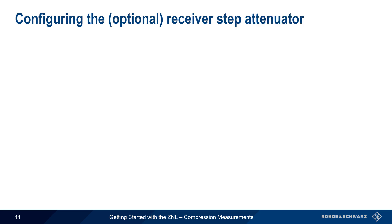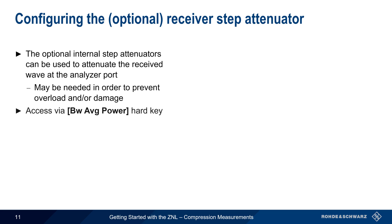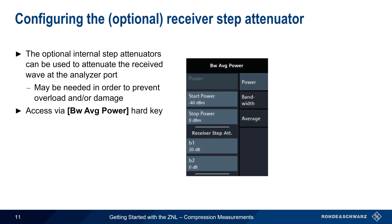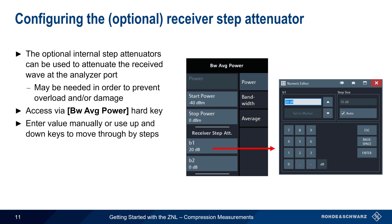Before we conclude this presentation, recall that the optional internal step attenuators on the ZNL can be used to attenuate the received signal or wave at the analyzer port. This sometimes may be needed to protect the instrument from overload or damage, especially when measuring high gain amplifiers. To configure the step attenuators for a given port, press the Bandwidth Average Power hard key, and then select the port to configure. The attenuation values can be manually entered, or the up and down arrows can be used to move stepwise through this range. On the ZNL, attenuation can be configured from 0 to 30 dB in steps of 10 dB.